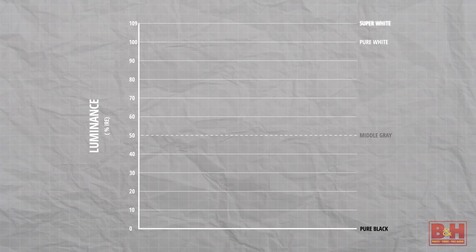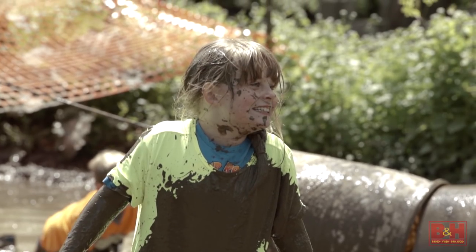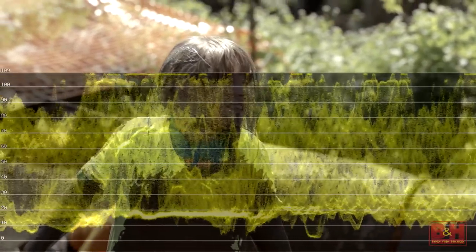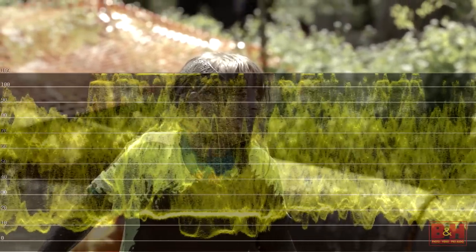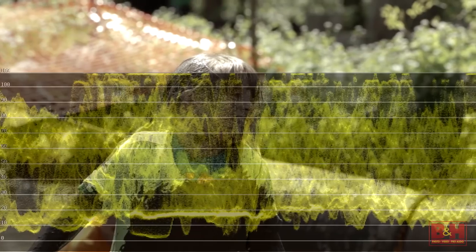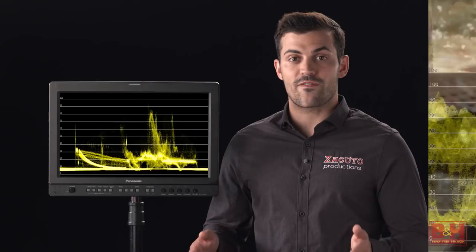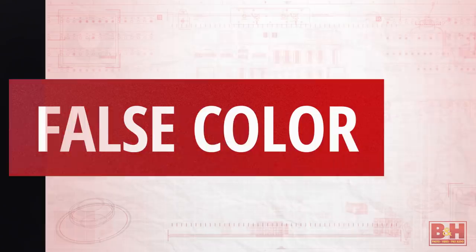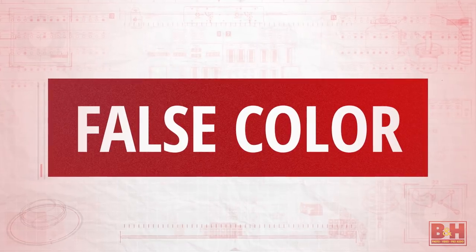Now, unlike the histogram and zebras, we are seeing the full luminance range of the image and exactly where each value occurs. This leads us to our final production scope: false color. False color is an increasingly popular tool for evaluating exposure.